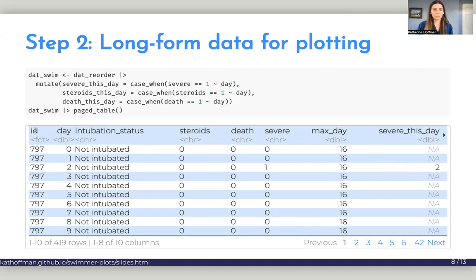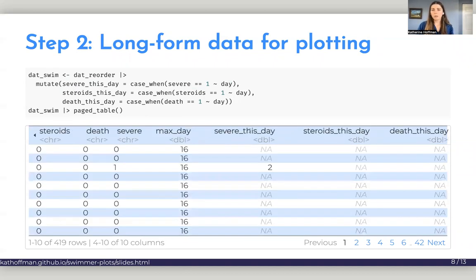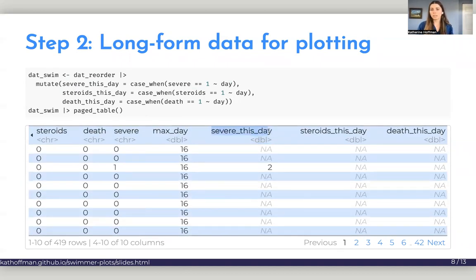We have these new columns called severe this day, for example, and this first patient became severely hypoxic on day 0, 1, 2. And so at that day, instead of it being an indicator variable, we now have a day variable, which is 2, and it's NA otherwise.